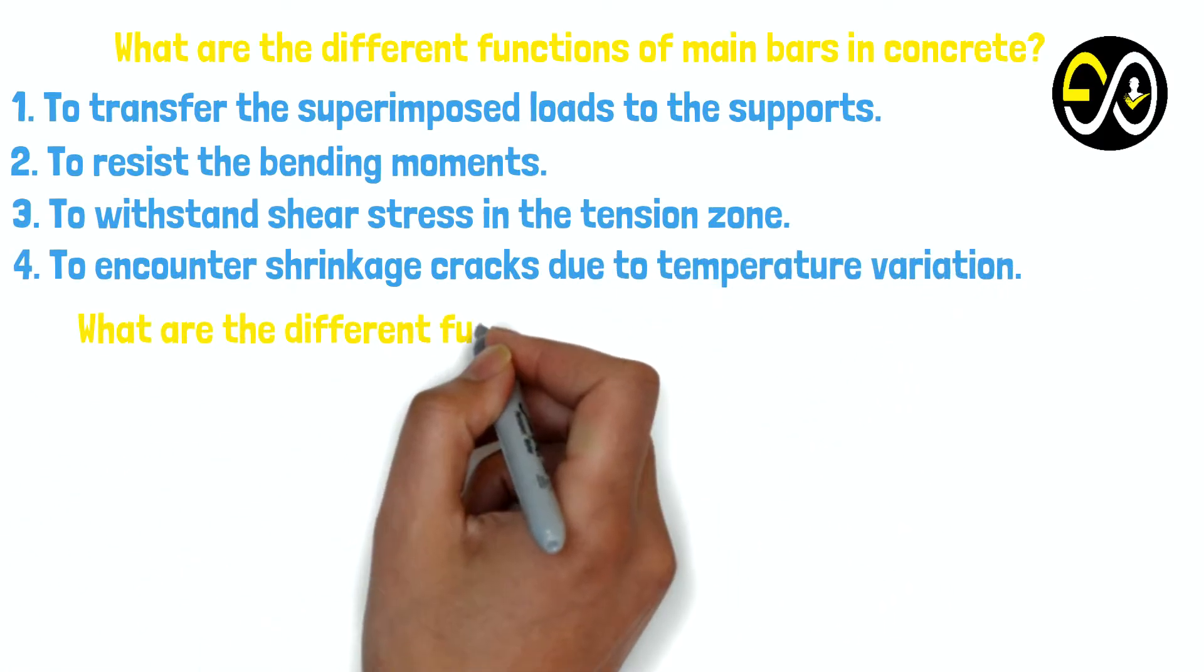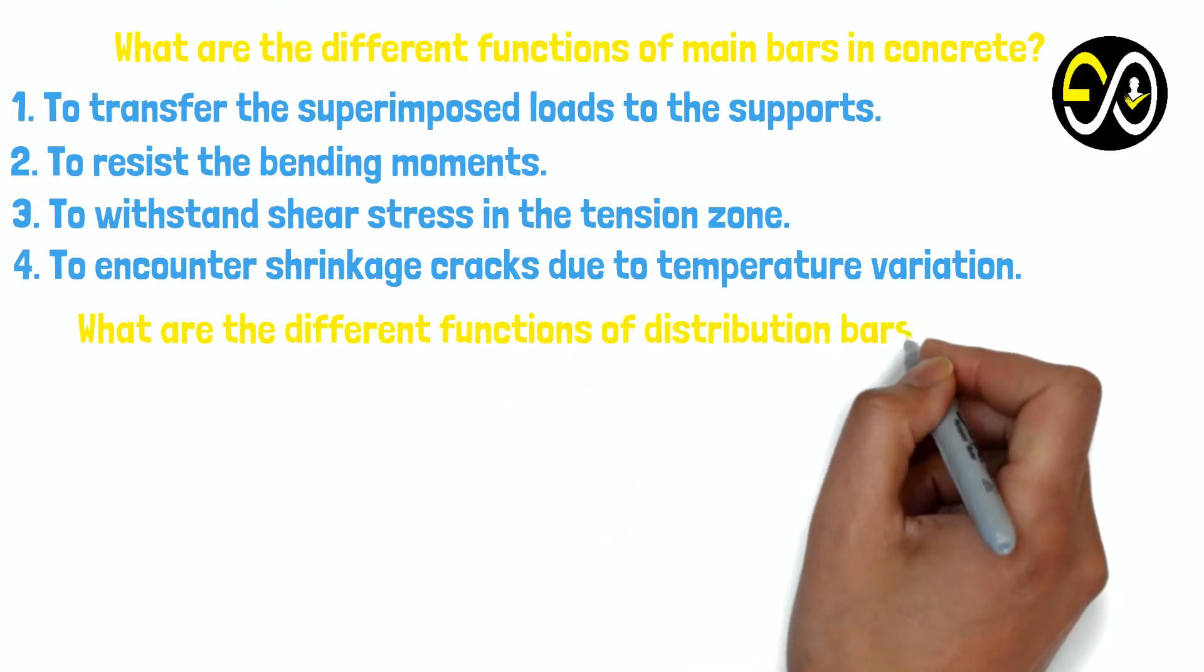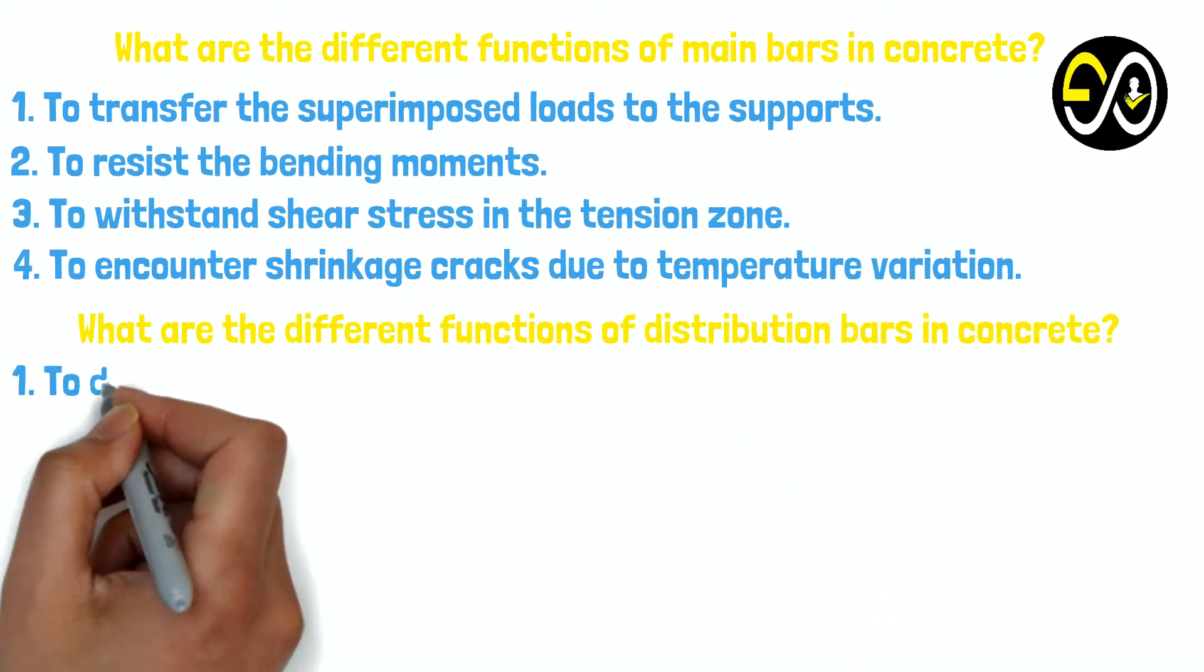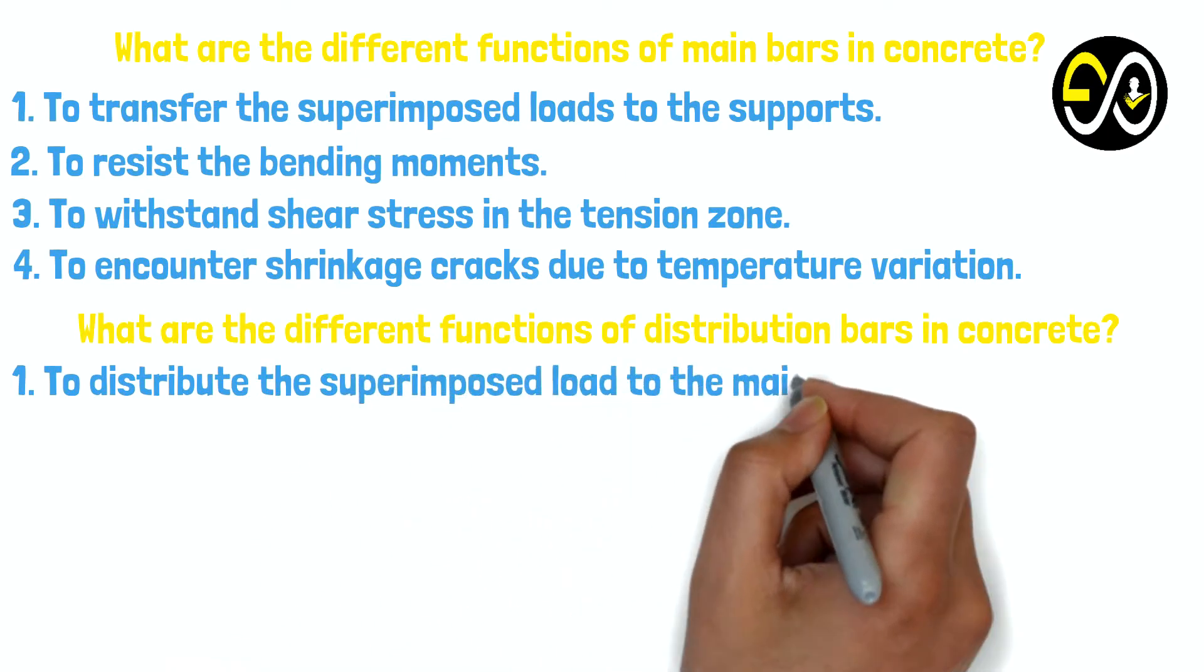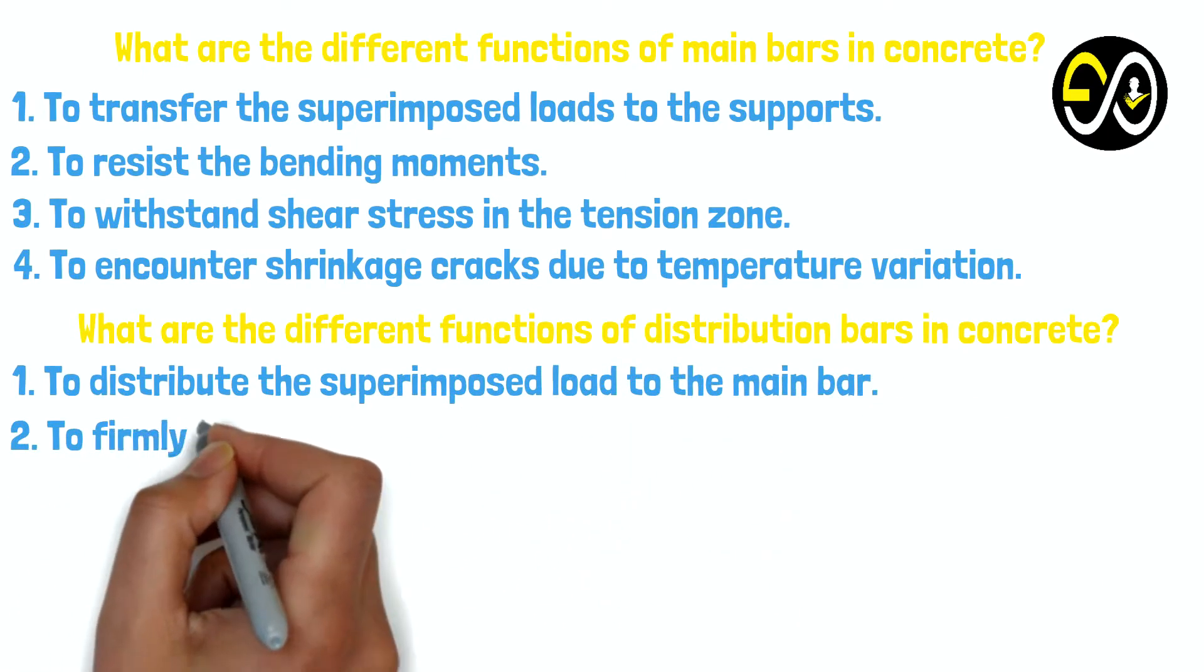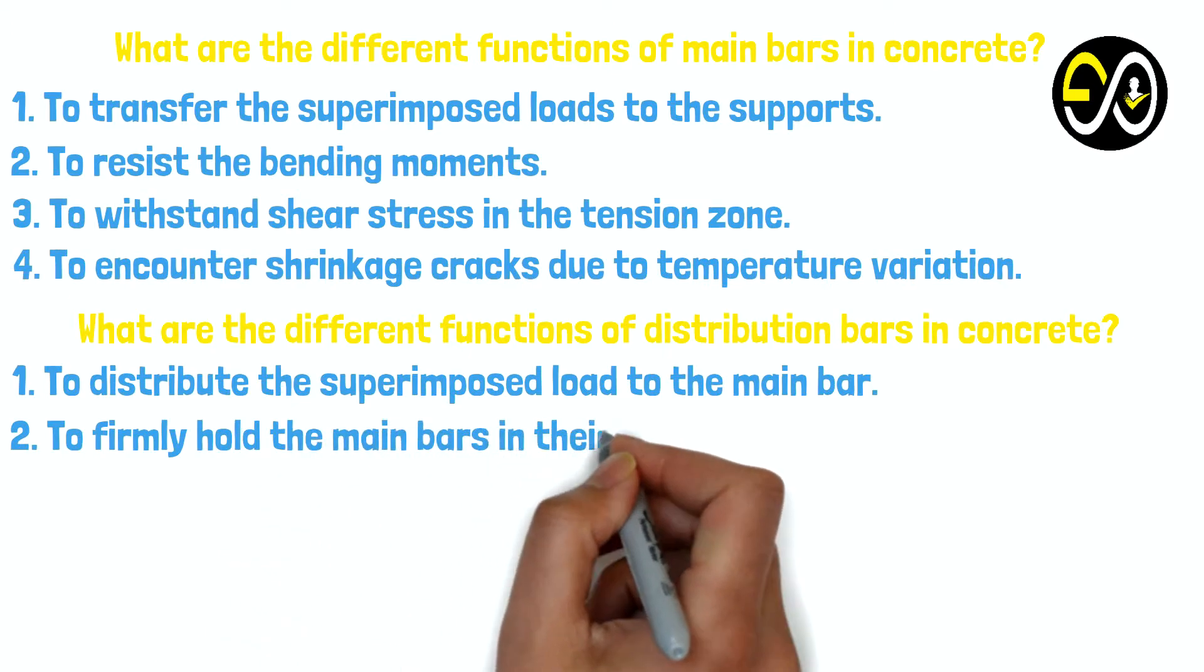What are the different functions of distribution bars in concrete? 1. To distribute the superimposed load to the main bar. 2. To firmly hold the main bars in their given position.